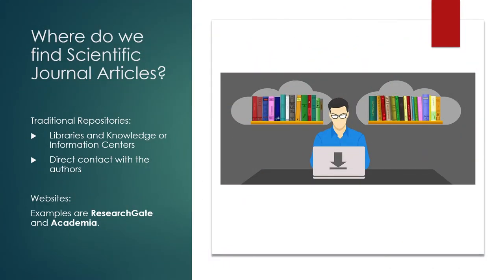Students and researchers may also opt to use the traditional repositories such as physical libraries and knowledge or information centers. They can also contact the authors directly for the materials they need. The power of the internet also allows anyone to share or post their scientific or scholarly articles through websites like ResearchGate and Academia.